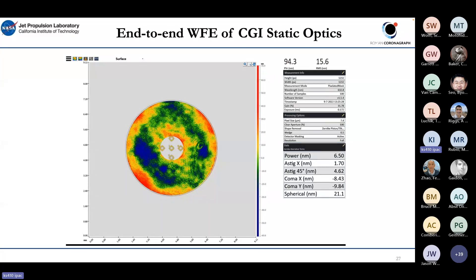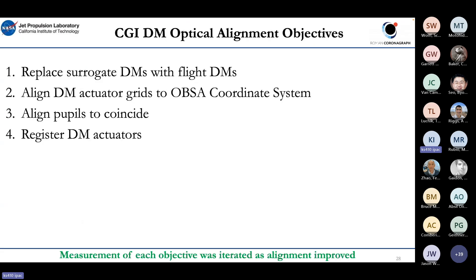The end-to-end wavefront error after static optics were introduced was 16 nanometers against a 40 nanometer requirement. When installing the DMs, there were four alignment goals: replace the surrogates; align their actuator grids laterally into the coordinate system created with the laser tracker point cloud; check the pupil alignment; and ensure that the actuators of DM1 were nested within the actuators of DM2.